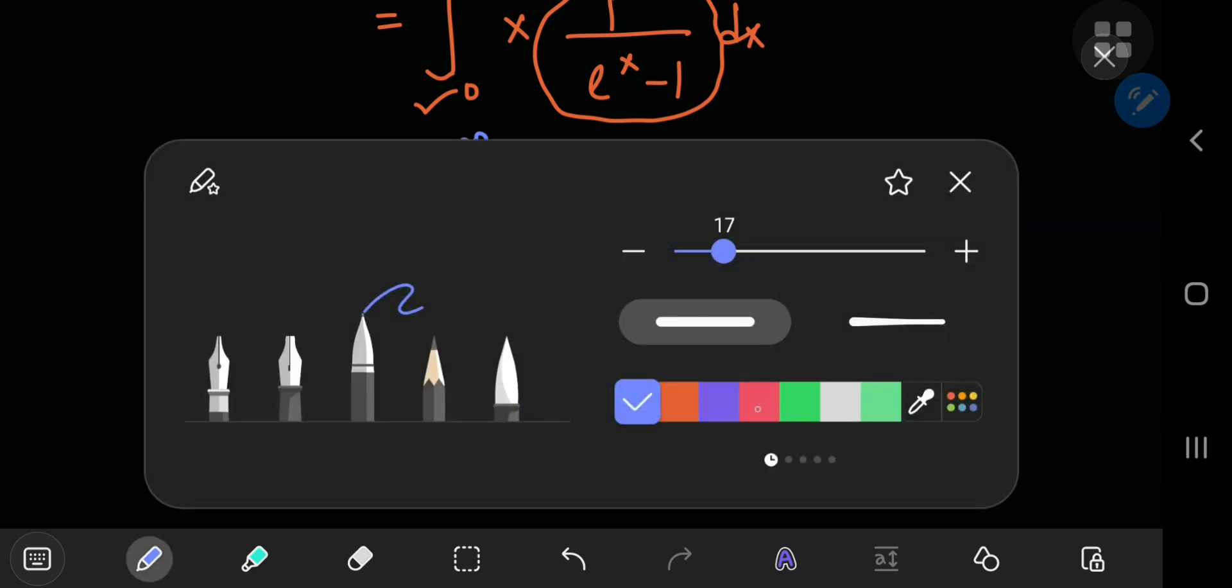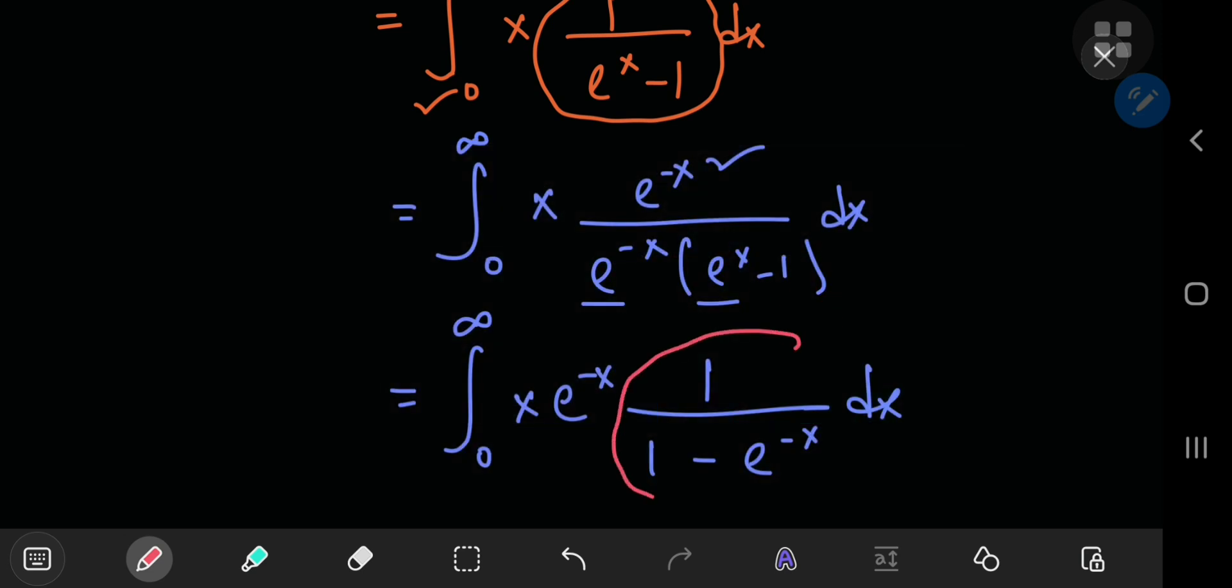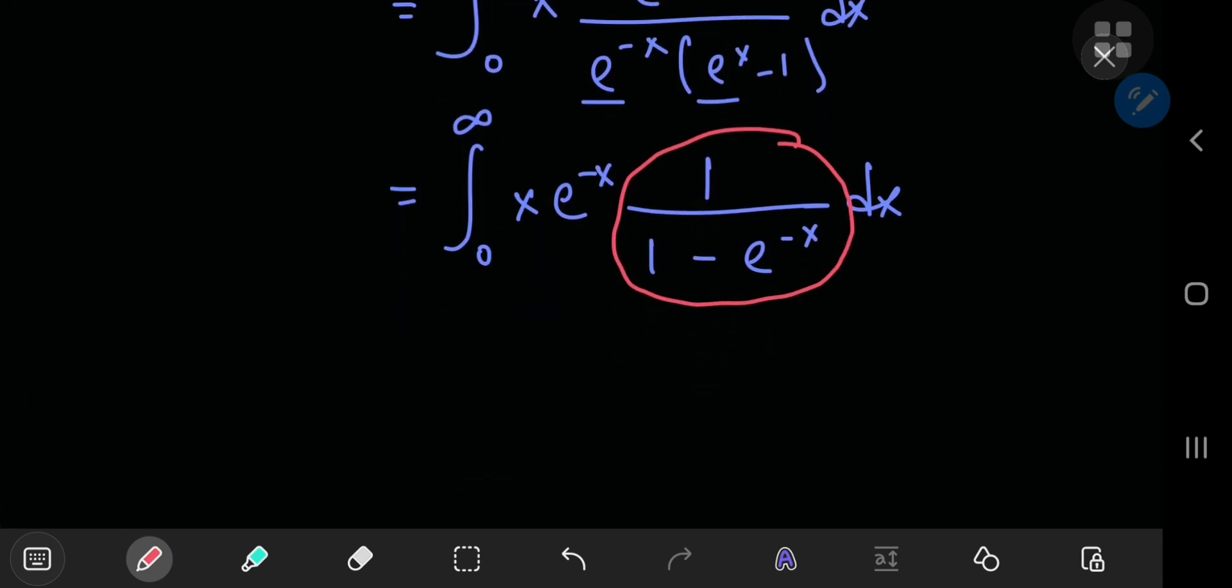This time around, the term involving the exponential function is in fact a convergent geometric series. So we can use a series expansion here. 1 by 1 minus z, the series expansion of this is the infinite sum over non-negative integers k of z to the k. So all you have to do is replace z by e to the negative x. So let's write this as the infinite sum over the non-negative integers k of e to the negative kx.